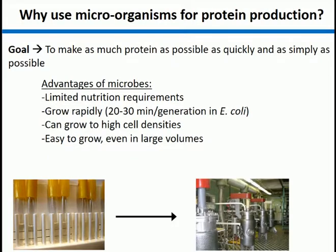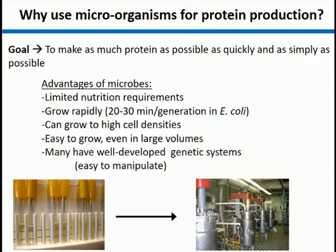Because it's easy to grow in large cultures, you can grow it in huge batch cultures — fermenters of 50, 100 liters, and even bigger — which means you can make even more of your protein. Many bacteria, because they are relatively simple organisms, have really well-developed genetic systems that make them really easy to manipulate. We know a lot about how bacteria make RNA from DNA and how they make proteins from mRNA, and we can manipulate that to a greater degree in prokaryotes because they're just such simpler organisms.